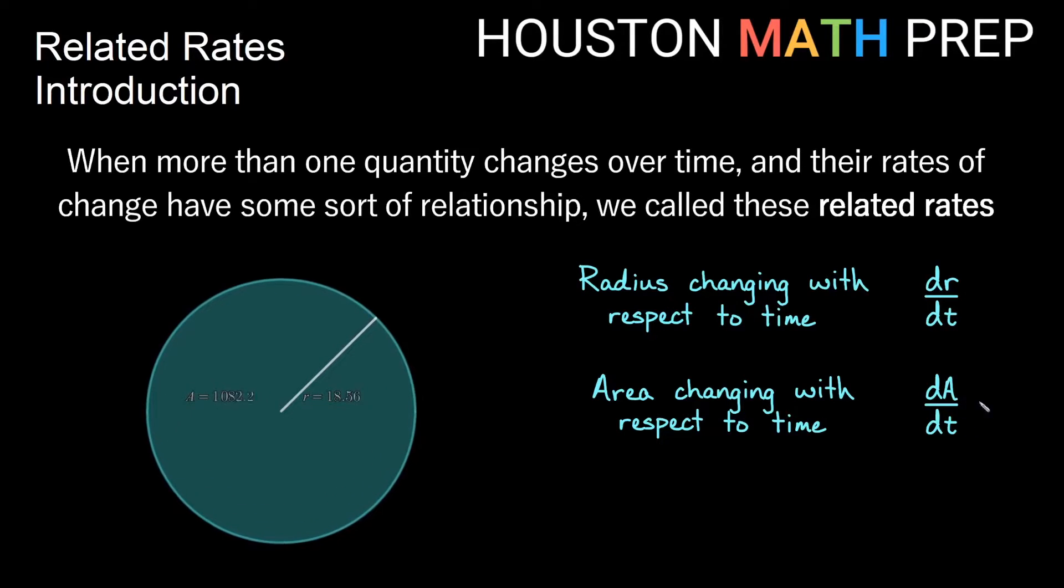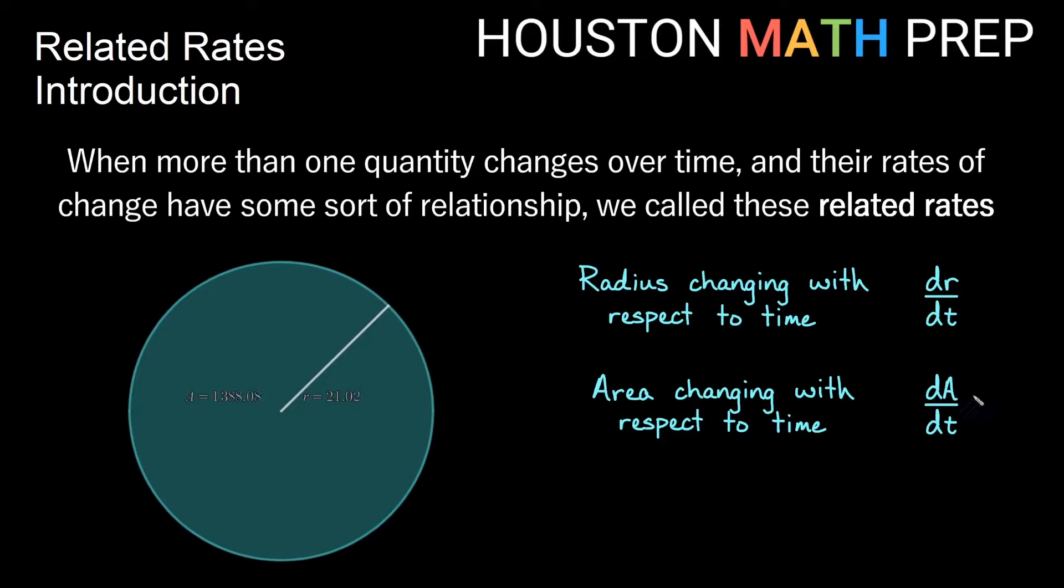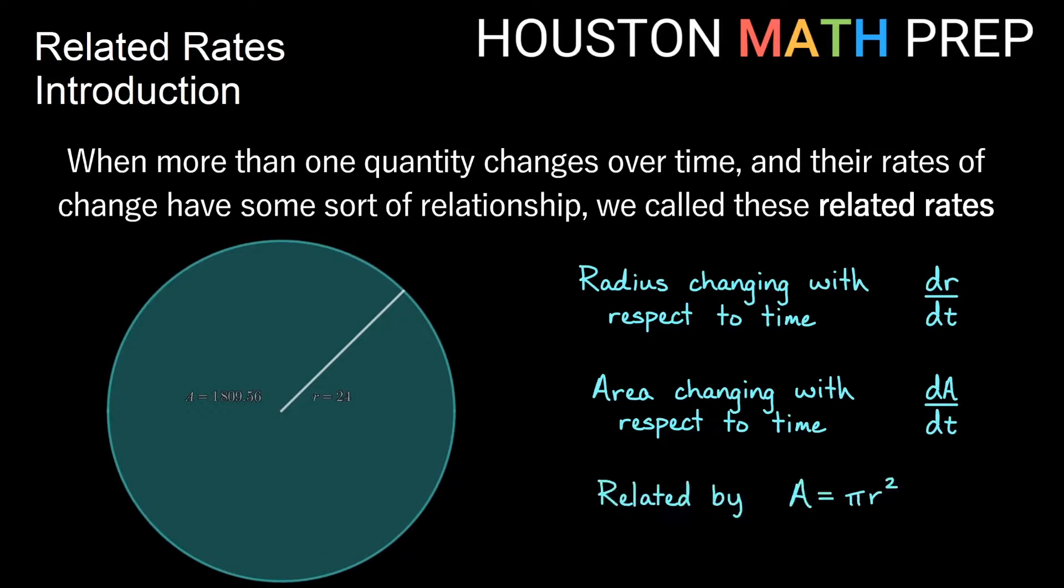And these two rates of change, the radius changing with respect to time and the area changing with respect to time, are related by some sort of geometric formula.